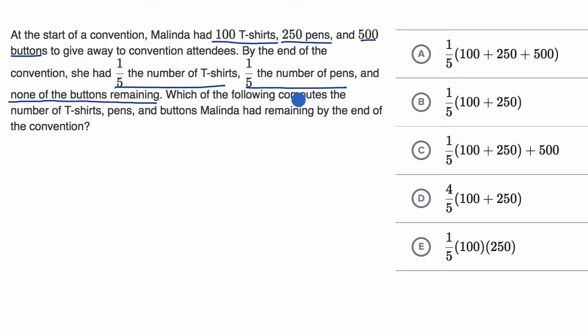Which of the following computes the number of T-shirts, pens, and buttons Melinda had remaining by the end of the convention?